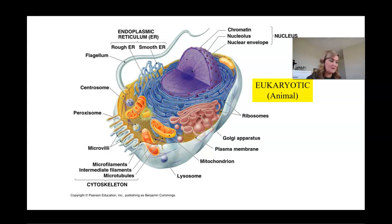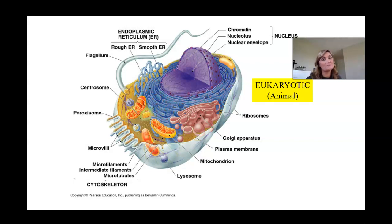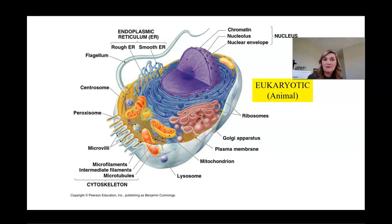Microfilaments help create the cytoskeleton, which also consists of intermediate filaments and microtubules — all of which give the cell shape and act as its skeleton. Ribosomes are the main protein producers inside the cell. The Golgi apparatus is responsible for sorting, packaging, and modifying proteins. The plasma membrane surrounds the cell, keeping the outside environment separate from the inside and regulating what comes in and out. The mitochondria is the powerhouse of the cell where most metabolism takes place and ATP is made. Lysosomes are vacuoles filled with about 50 different types of enzymes that break down and dissolve things the cell doesn't need.